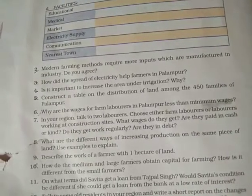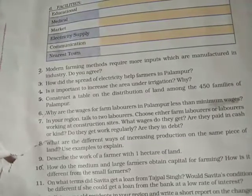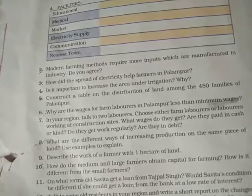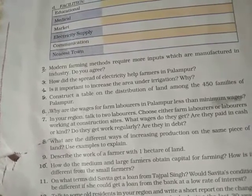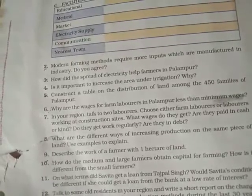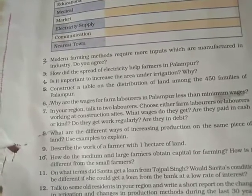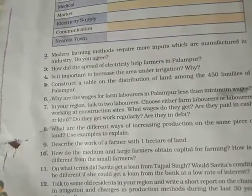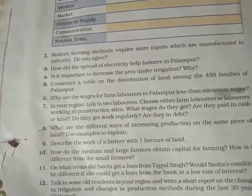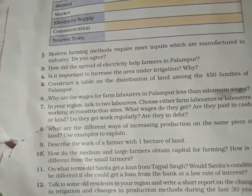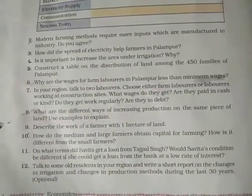Question four: Is it important to increase the area under irrigation? Yes. Irrigation facilities are available to only about 40 percent of cultivated land in the country. The remaining 60 percent of cultivated land is still dependent on rainfall. This means the benefit of multiple cropping cannot be achieved by 60 percent of farmers, who produce less, earn less, and live in poverty. That is why it is important to increase the area under irrigation.